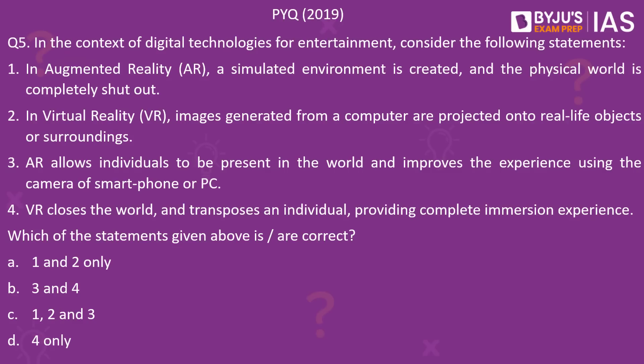Moving on to the last question of the day — a question from the UPSC 2019 GS Paper 1. In the context of digital technologies for entertainment, consider the following statements. Statement 1: In augmented reality, a simulated environment is created and the physical world is completely shut out. Statement 2: In virtual reality, images generated from a computer are projected onto real-life objects or surroundings. Statement 3: AR allows individuals to be present in the world and improves the experience using the camera of a smartphone or PC. Statement 4: VR closes the world and transposes an individual, providing a complete immersion experience.